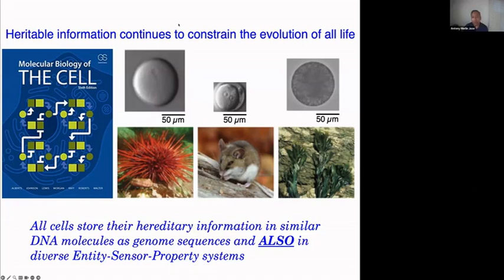Yes, great question. There are famous statements like 'what is true for E. coli is true for the elephant' by Monod. I would argue that at a minimum, entity-sensor-property information plus genome information is transmitted in all organisms. But in humans there's definitely more — gestation and placental communication — so what additional information gets transmitted depends on how complex the life cycle is. In a pregnant woman carrying a female fetus, you're actually communicating across two generations, since the fetus is already developing oocytes.